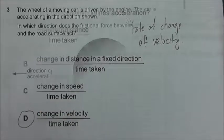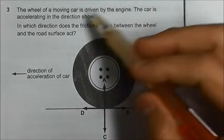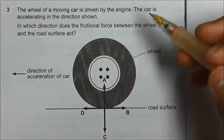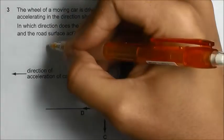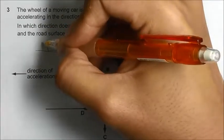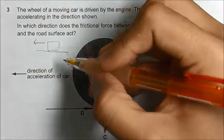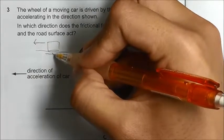We are asked what is the direction of the frictional force between the wheel and the road surface. This scenario is very different from a normal moving object, because for a moving object, if we are moving this way, the frictional force is always opposing the motion.